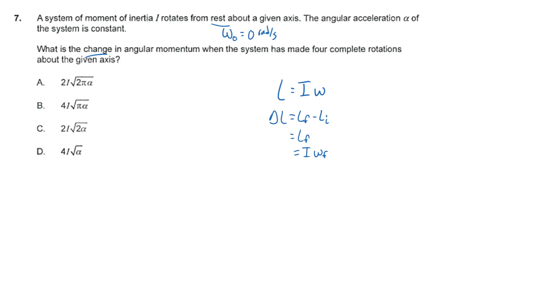And notice that this I, this moment of inertia, shows up in all of the answer choices. So all we're really looking for right now is the final angular velocity. So how do we find that?